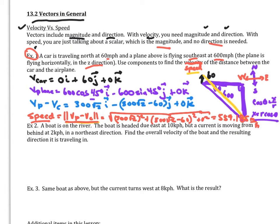A few things to note: the x component uses r cosine theta and the y component uses r sine theta. I put a negative on the y component because I used 45 degrees and that direction is negative. If I had used negative 45 degrees, I could have used a plus sign instead. Either way, you have to figure out whether the component is positive or negative.